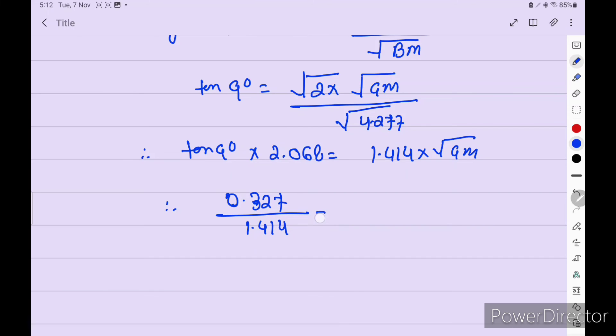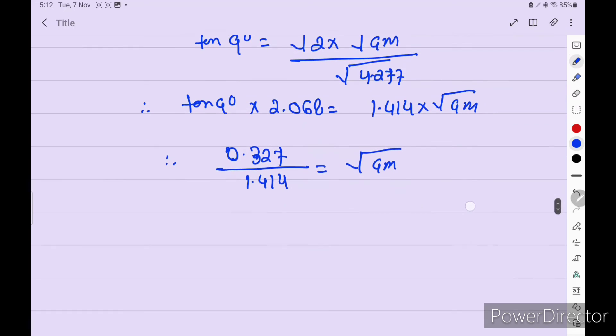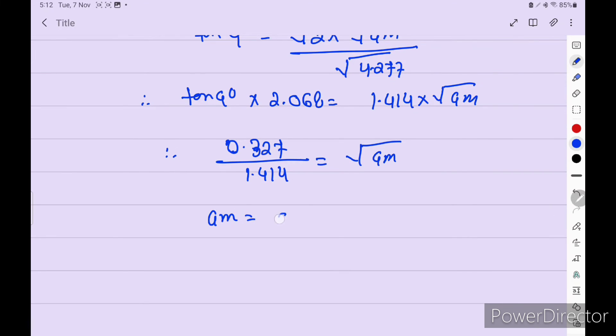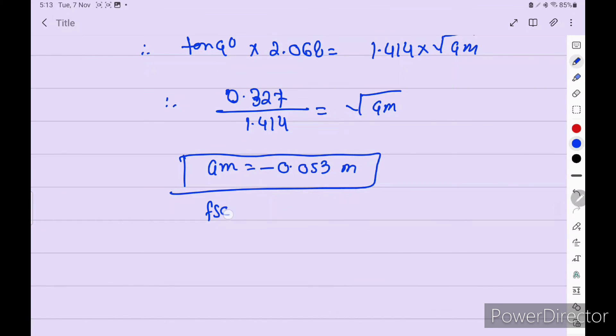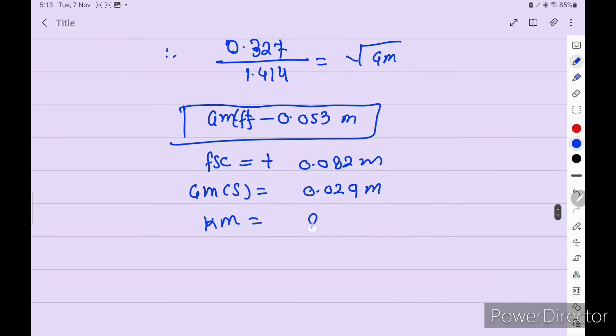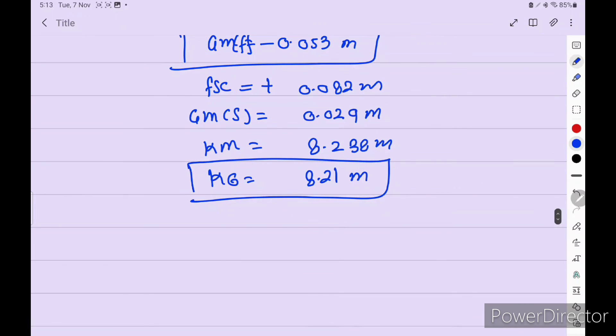So we get GM is equal to 0.053 meters. So 8.238 meters, so we can find out the KG 8.21 meters.